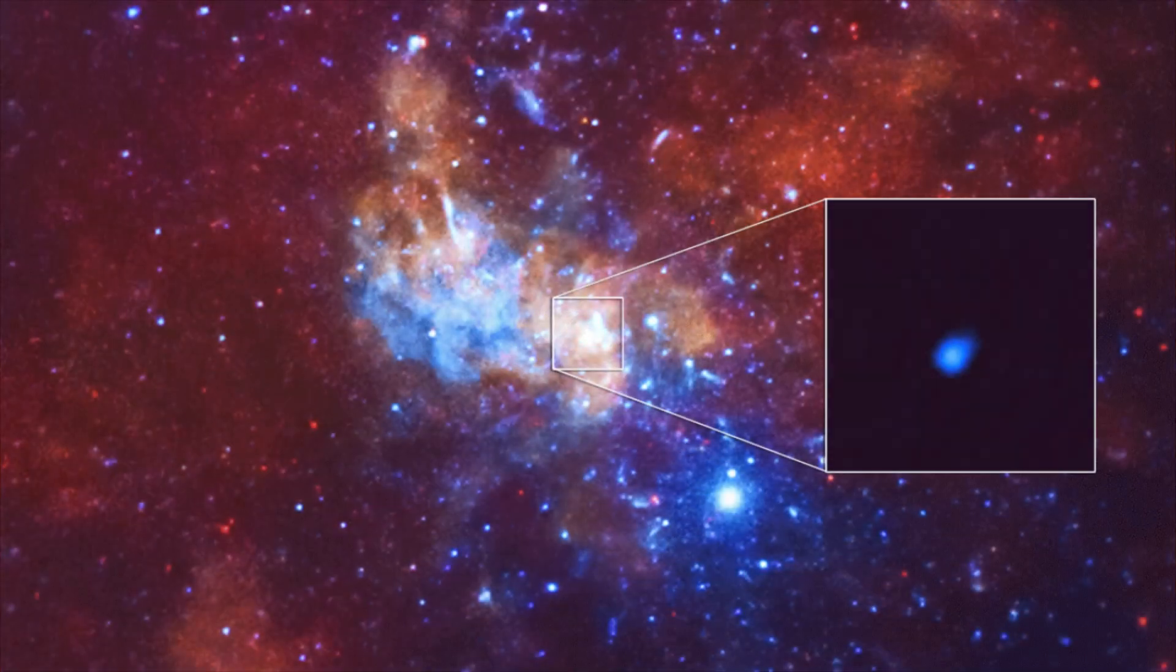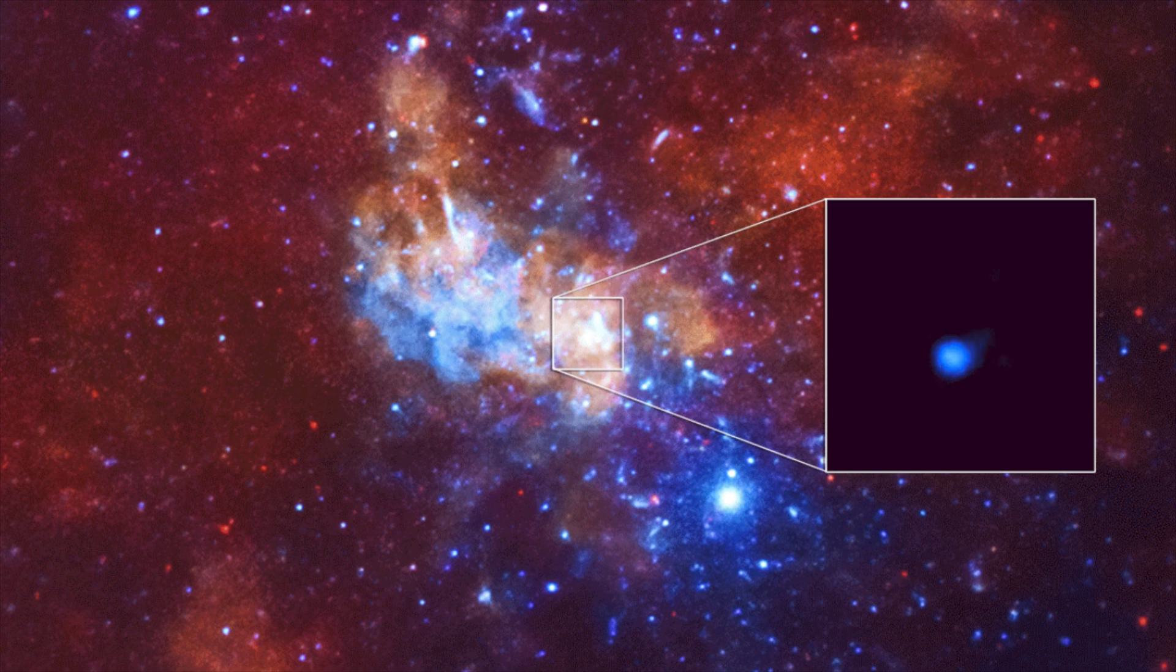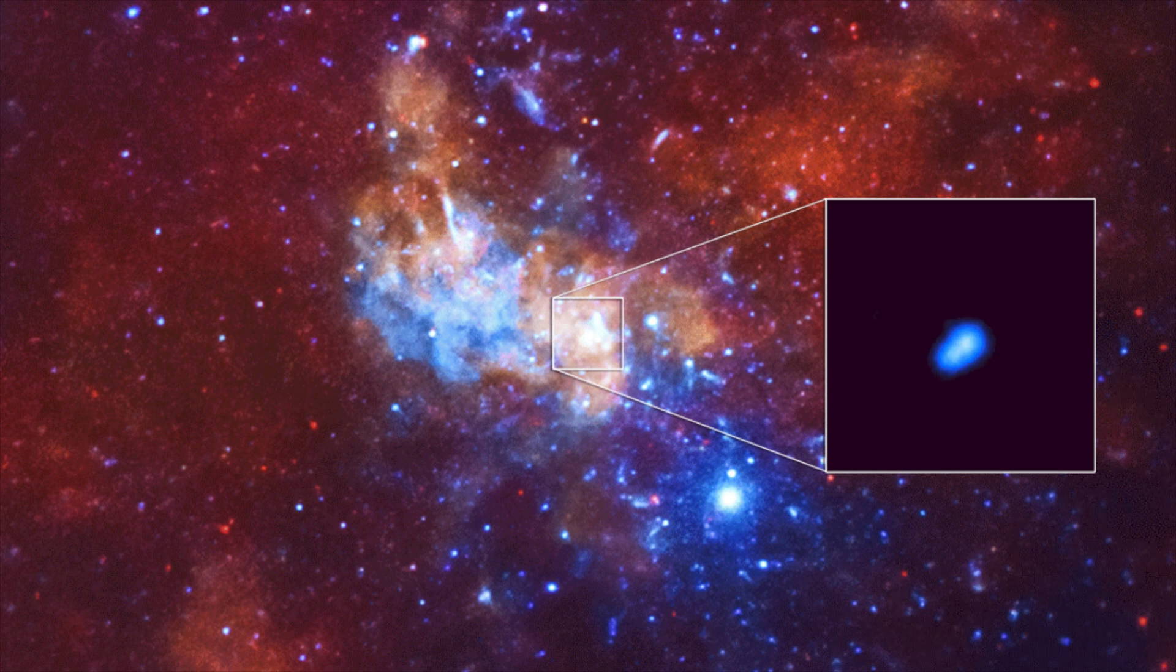In late 2013, an outburst, what astronomers call flares, was spotted blasting from the center of our galaxy. Like many flares, it was made up of high-energy x-rays. However, this particular outburst was 400 times brighter than the x-ray output normally seen coming from this black hole.